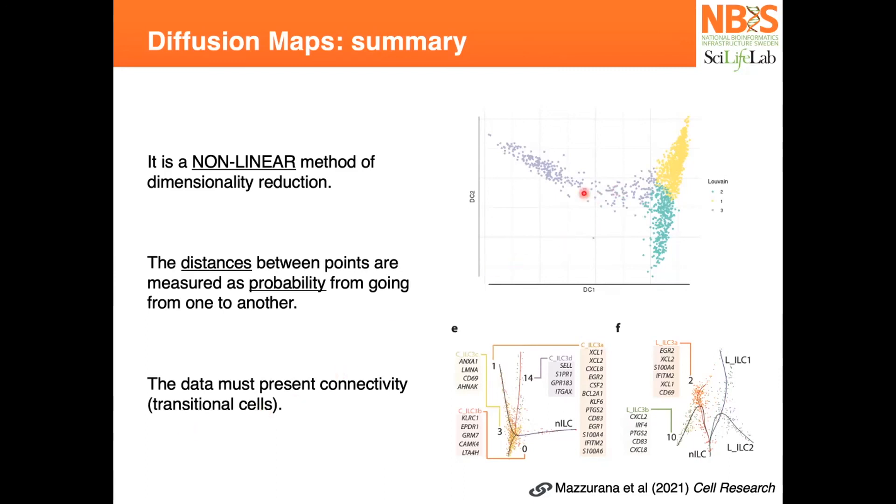But of course, even for diffusion maps, you need to have the transitional cells in your dataset, so make sure that you have those cells there.